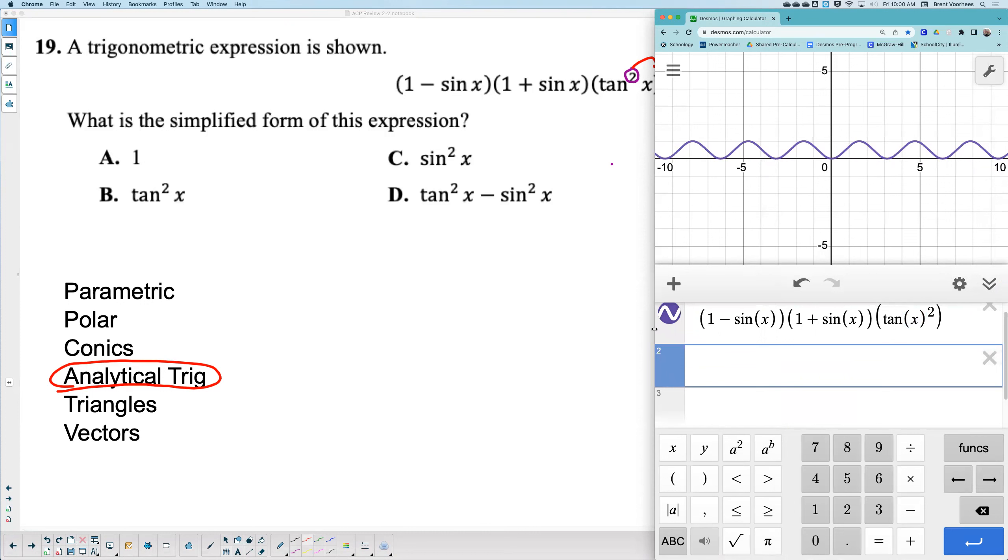Now, would that be the graph of one? No. How do I know it's not one? Because that would be a flat line. I'll type in Y equals one. Notice that's not right. It's not one. So let's keep trying the other ones.